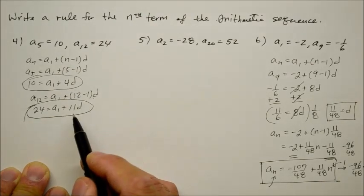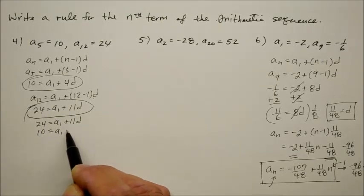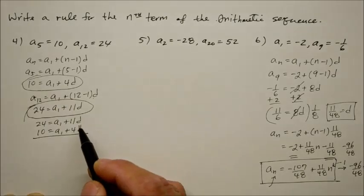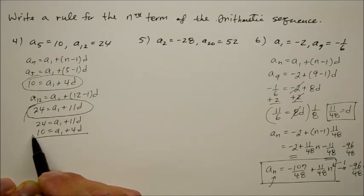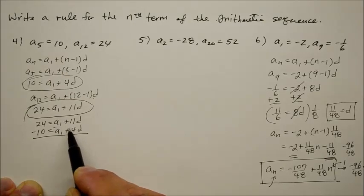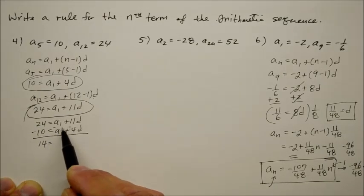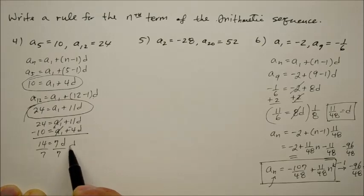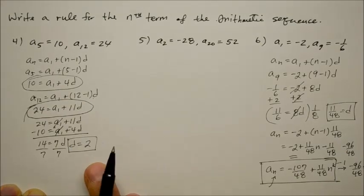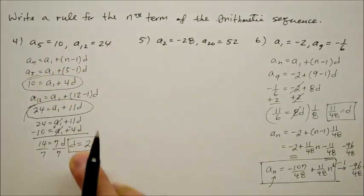So: 24 equals a sub 1 plus 11d. Take the second equation: 10 equals a sub 1 plus 4d. Now let's oppositize the second equation so we can find the difference — multiply the entire thing by negative 1 — so it becomes negative 10 minus a sub 1 minus 4d. When we combine: 24 minus 10 is 14; a sub 1 minus a sub 1 cancels out; 11d minus 4d is 7d. To solve for d, we divide by 7. The common difference is 2. That means to get from one term to the next, you constantly add 2.